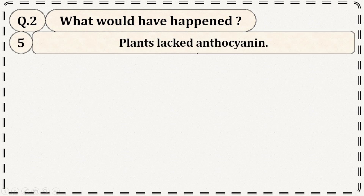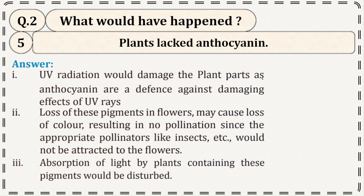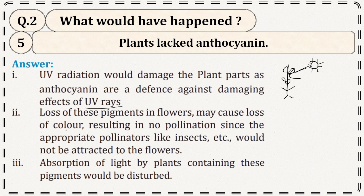What if plants lacked anthocyanin? Anthocyanin is a pigment found in plants. If it were absent, UV radiation would damage the plant's parts, as anthocyanin acts as a defense against the damaging effects of UV rays. Loss of these pigments in flowers may cause loss of color, resulting in no pollination since appropriate pollinators like insects would not be attracted to the flowers.